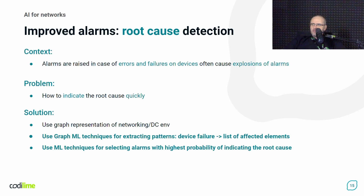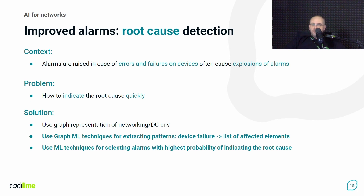Contrary to normal usage of past data, we cannot expect that such events are frequent. In general, we lack sufficient data because failures, errors, and explosions of alarms are too rare to collect an appropriate amount of data for analysis. So in this case, we have to use another type of data, which we call the graph representation of a networking or data center environment. This is usually a huge graph where nodes represent devices and edges represent the relations between those device elements.